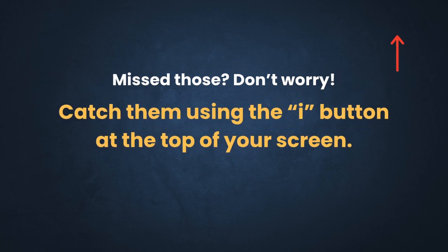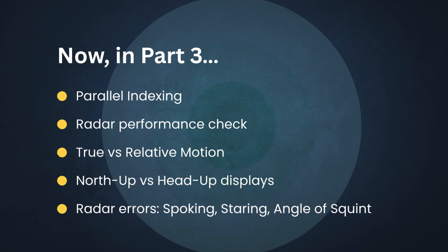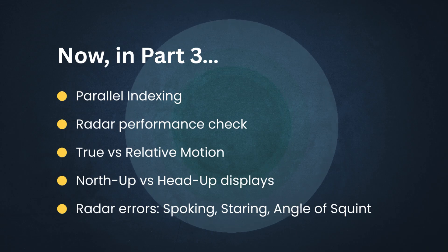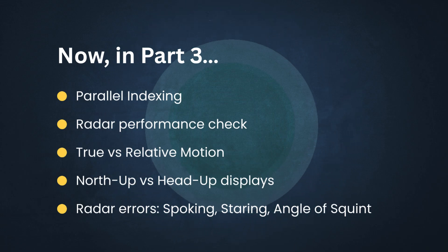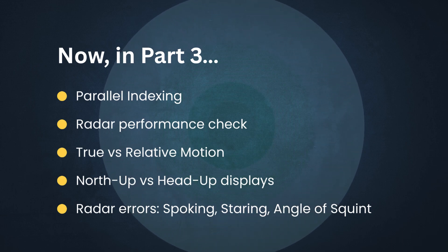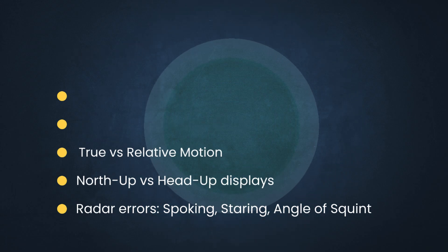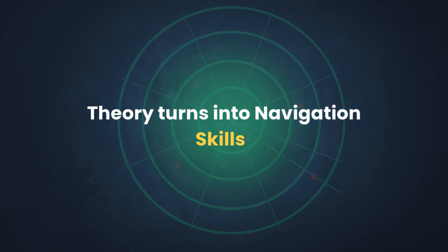If you missed those, don't worry — you can check them out using the eye button at the top of your screen. Now, in Part 3, we're taking things one step further. We'll cover how to check radar performance, parallel indexing, true and relative motion, north-up and head-up displays, and common radar errors like spoking, staring, and angle of squint. Stay tuned, because this is where theory meets real navigation.